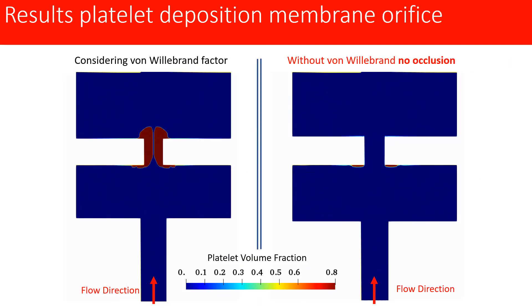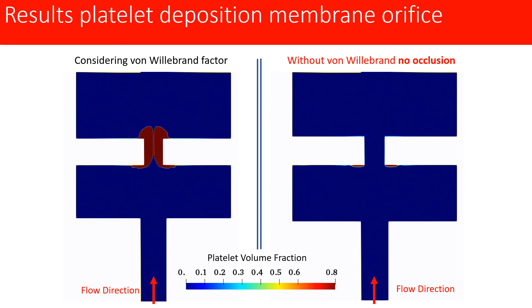From the animations we can see that in the left case, in which we consider vWF factor activity, a clot grows in order to occlude the central orifice. However, in the case when vWF activity is turned off, only a frontal clot is observed at each part of the membrane and no occlusion is observed.